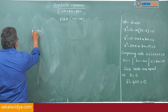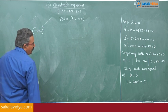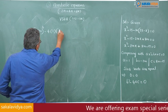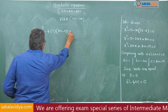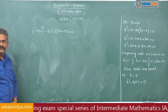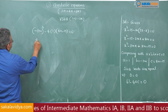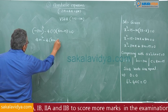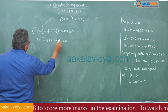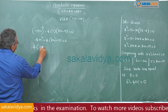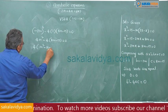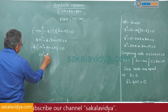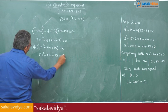Substituting: minus 2m whole squared minus 4 into 1 into 8m minus 15 equals 0. So, 4m squared minus 4 times 8m minus 15 is equal to 0. Taking 4 common: m squared minus 8m plus 15 is equal to 0.